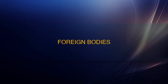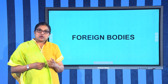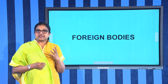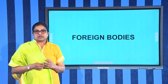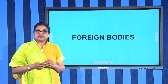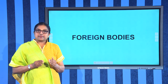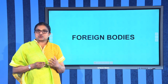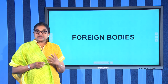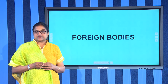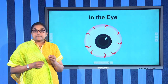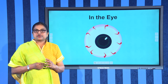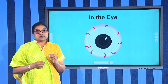Foreign bodies are small objects that enter the body through a wound or an opening such as the eye, ear, or mouth. A foreign body in a wound may sometimes be plugging the wound and preventing blood loss. Children often swallow small items such as coins or beads, or push them up their noses or into their ears. In the eye, bits of dust, grit, eyelashes, or insects are most commonly found.